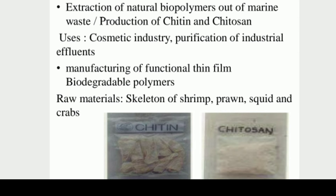We use chitosan and biopolymers derived from marine waste — chitin or chitosan — using shrimp, prawns, and squid. The main benefits in India are in the cosmetic industry and purification of effluents.